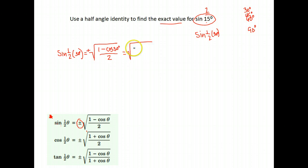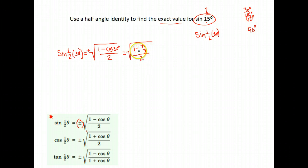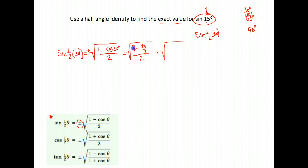That gives us the positive square root of 1 minus the cosine of 30. The cosine of 30 is the square root of 3 over 2. So now we have the square root of 1 minus the square root of 3 over 2, all over 2. We need to keep going and simplify — we can't have a fraction within a fraction. So in the numerator, we need a common denominator. 1 is the same as 2 over 2, so we can subtract those, giving us 2 minus the square root of 3 over 2, over 2.